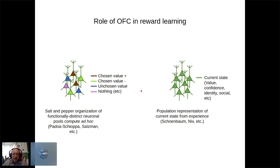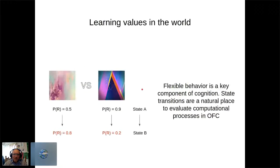The OFC field is divided into two schools of thought. One identifies functional subclasses of neurons encoding things like chosen value, unchosen value, or nothing. The other hypothesis holds that OFC neurons reflect the animal's current state within a task — not just value, but also things independent of value such as confidence, identity of the chosen item, and social factors. This is more of a population-level representation of the internal state of whatever the animal is doing.